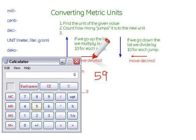59 times 10 gives us 590 times 10 again gives us 5900.